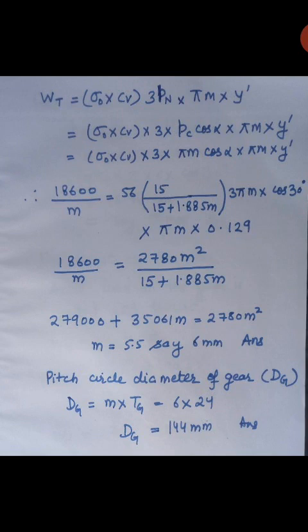Now we will calculate the pitch circle diameter of the gear. Dg is given by module multiplied by number of teeth on the gear Tg. We will also calculate the face width. We get Dg equal to 144 mm. So we have calculated the module as 6 mm and pitch circle diameter as 144 mm.